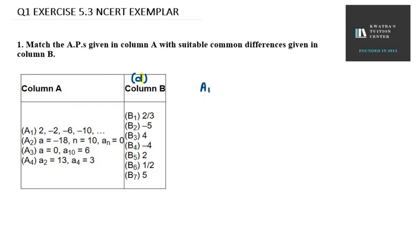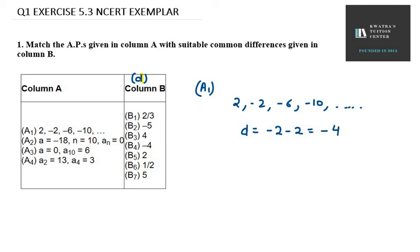Let's find d for A1 first. We are given the sequence 2, -2, -6, -10, and so on. We need to find d. So a2 minus a1, that is, the second term minus the first term gives us -4. So A1 matches with B3.